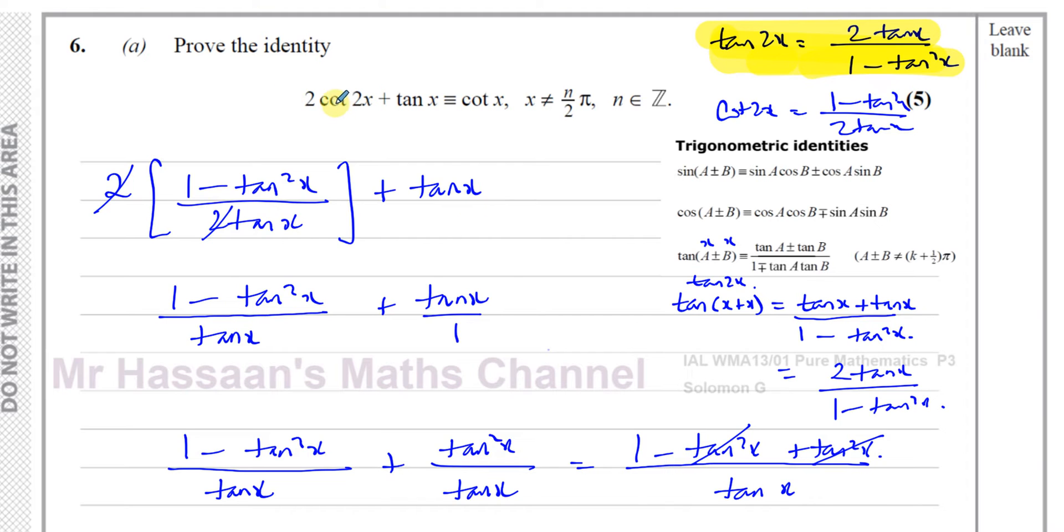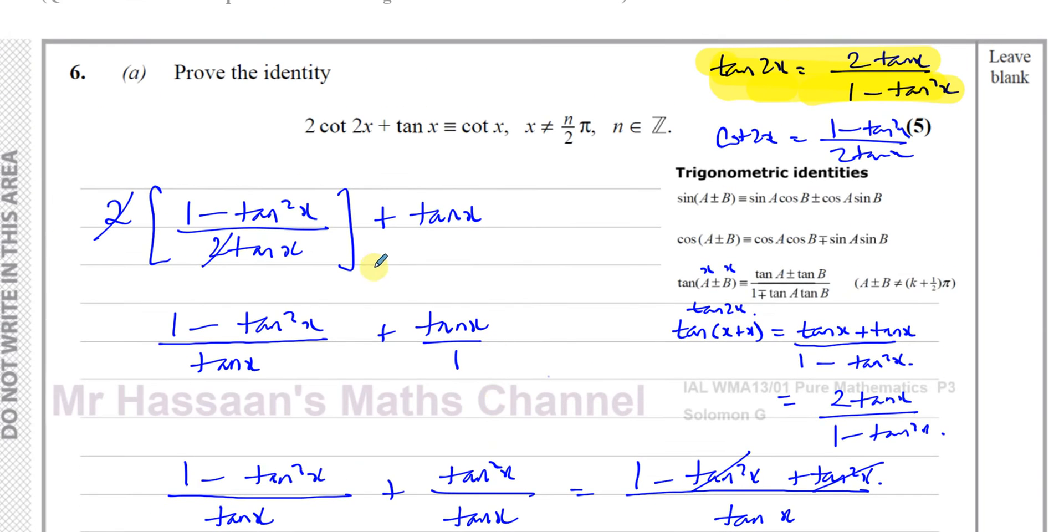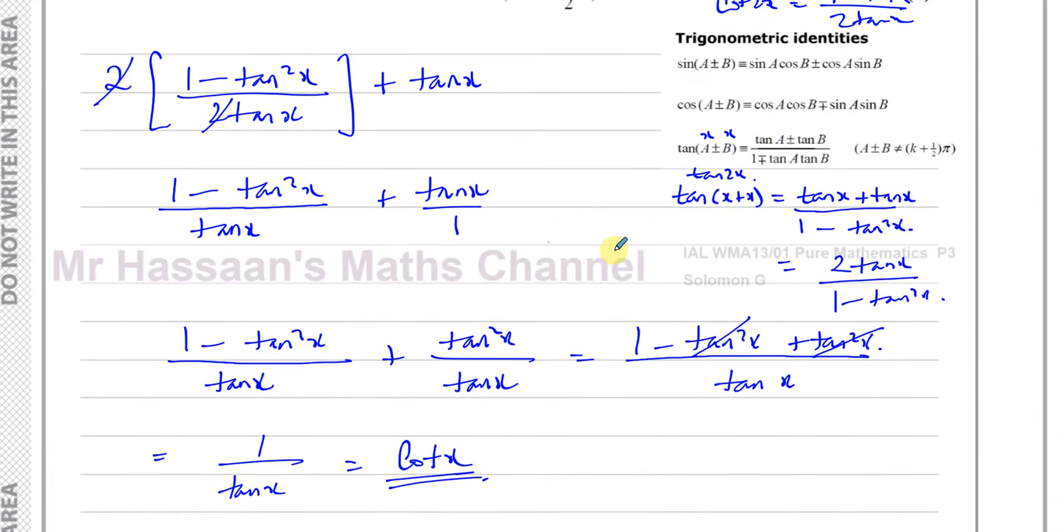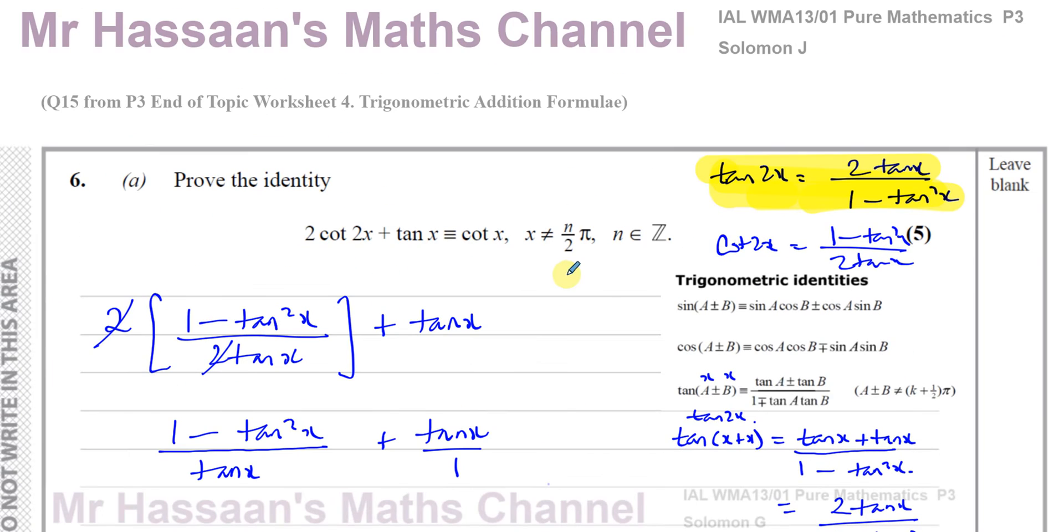I'm sure if we change this into 2 cosine 2x over sine 2x plus sine x over cosine x, and then use the double angle formula for cosine and sine, we would get to the same answer. But I think this is a lot easier to use. So we've proved this identity. And that's part A done.